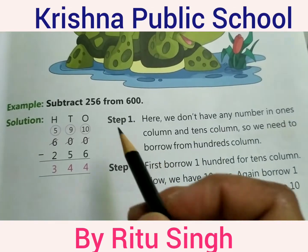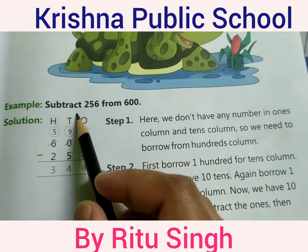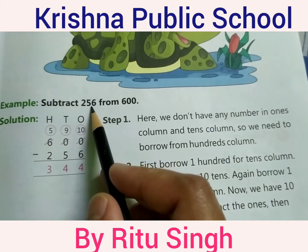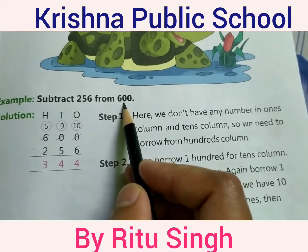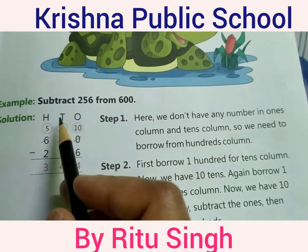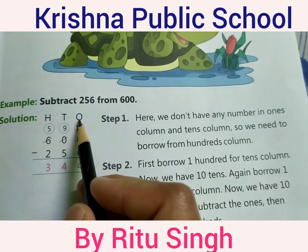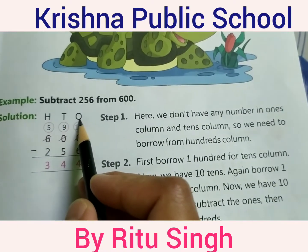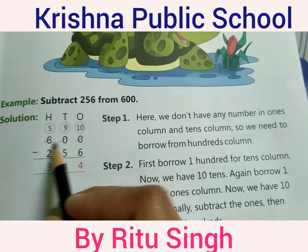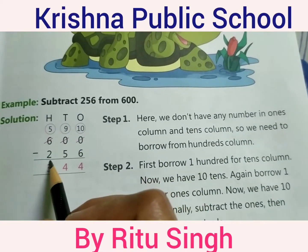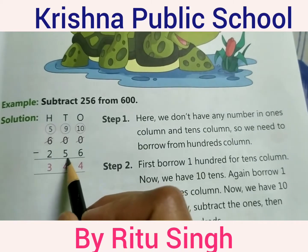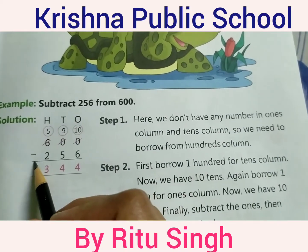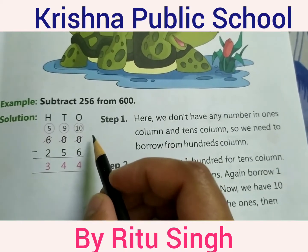For example, subtract 256 from 600. First, write the place values: hundreds, tens, ones. Write the numbers 600 and 256, show the subtraction sign, then subtract.